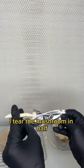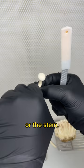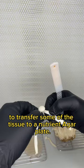I tear the mushroom in half exposing the sterile tissue on the inside of the cap or the stem. I use a pre-sterilized disposable scalpel to transfer some of the tissue to a nutrient agar plate.